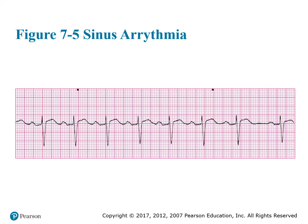This is the sinus arrhythmia. If you look at your R-to-R intervals, they're sporadically inconsistent — they correspond to your breathing pattern. Let's take a look at the first R-to-R interval and count the small blocks to demonstrate the irregularity.